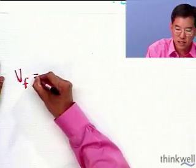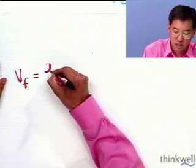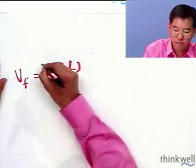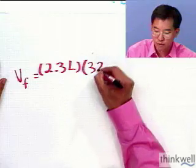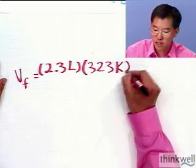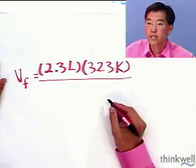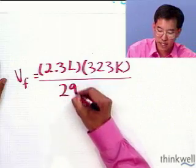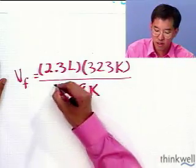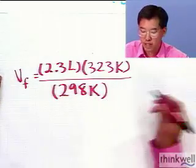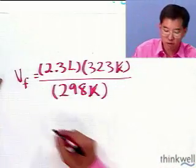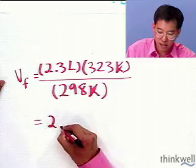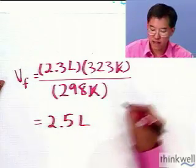V final is equal to the initial, which was 2.3 liters. The final temperature is 323 Kelvins. And the initial temperature was 298 Kelvin. Cancel out the Kelvins. That's going to give us something in units of liters. That's exactly what we want. And this turns out to be 2.5 liters.